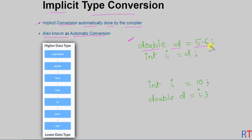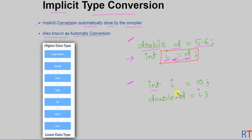With the value 5.6, and in the next line we are assigning the double variable to one integer variable 'i'. Here we are converting from a double variable to an integer variable, and this is happening automatically by the compiler. In another example, we have one integer variable 'i' which has the value 10, and then we are assigning the integer value to one double variable.